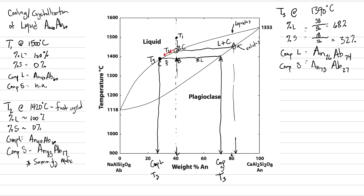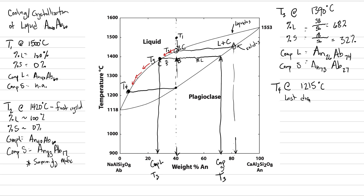Next, we need to find the temperature at which the very last drop of melt disappears. We keep crystallizing the melt until the last melt disappears — we never hit a eutectic. We need to find where our percent solid is 100% and percent liquid is 0%, which is where our bulk composition line crosses the solidus. I'll put a dot right there and go across to the left — this point is where the very last drip of magma disappears. We'll call that T4, at approximately 1215°C.